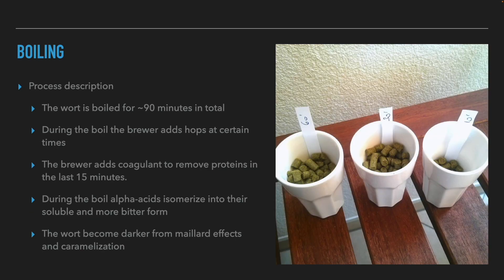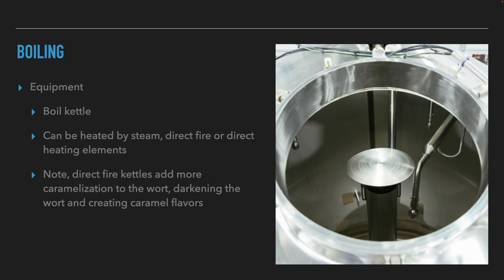The wort is boiled for 90 minutes in total. During the boil, the brewer adds hops at certain times — we will talk about hop additions in the fifth presentation. In the last 15 minutes, the brewer also adds a coagulant to remove proteins. Alpha acids from the hops isomerize into their more water-soluble and more bitter form. The wort also becomes darker from Maillard effects and caramelization of the sugars. The equipment needed is a boil kettle heated by steam, direct fire, or direct heating elements. Note that direct fire kettles add more caramelization, darkening the wort and creating caramel flavors.